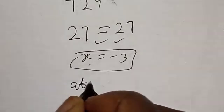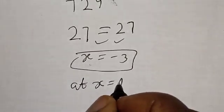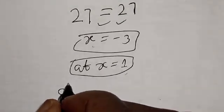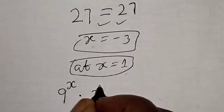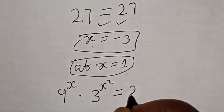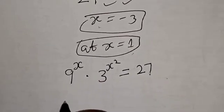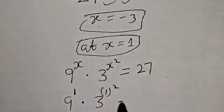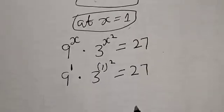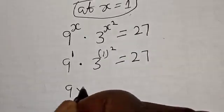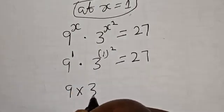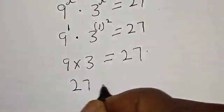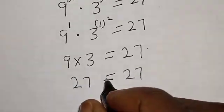We can also check at s equals 1. We have 9 raised to power 1 multiplied by 3 raised to power 1 squared, which must equal 27. So 9 raised to power 1 is 9, and 3 raised to power 1 is 3. Then 9 times 3 equals 27, which is equal to 27. This satisfies the given equation at s equals 1.